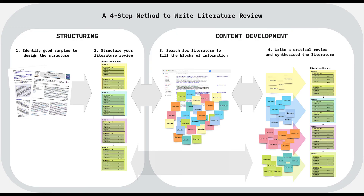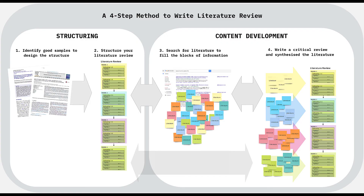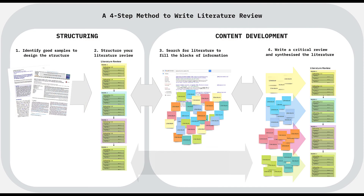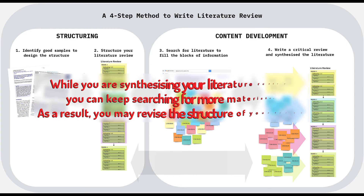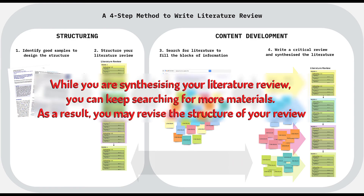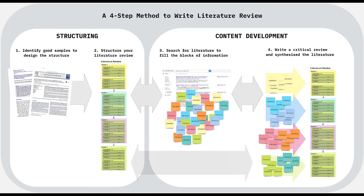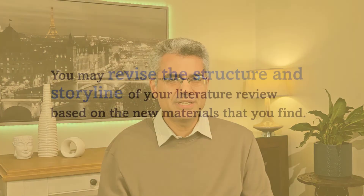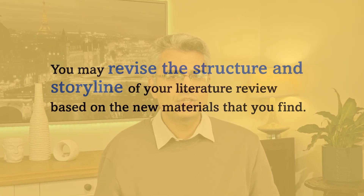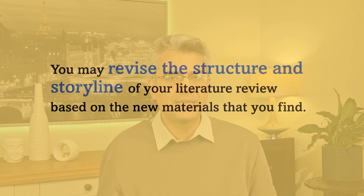Keep in mind that writing a good literature review is an iterative process. This is why there are double-headed arrows between step 3 and 4, and also between step 2 and 4. This means while you are synthesizing your literature review, you can keep searching for more materials. And as a result of more searching, you may revise the structure of your review. So in this process, you may revise and restructure your literature review, add or remove sections and paragraphs based on new materials you find, and improve the structure and storyline of your literature review.